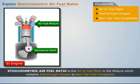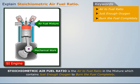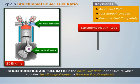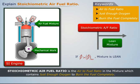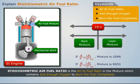Thus, stoichiometric air fuel ratio is the air to fuel ratio in the mixture which contains just enough oxygen to burn the fuel completely. If the air fuel ratio is greater than the stoichiometric air fuel ratio, the mixture is known as a lean mixture. If the air fuel ratio is lower than the stoichiometric ratio, the mixture is known as a rich mixture.